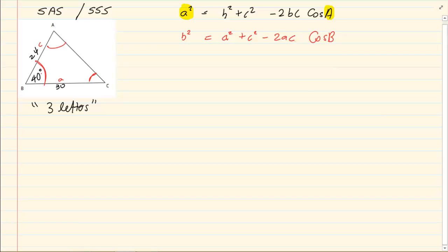Now substitute what we have. We have that a is 30. We have that c is 24 minus 2 times 30 times 24. Again it's the length that I am talking about cos 40.